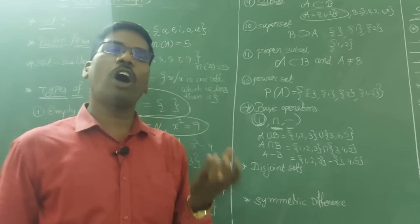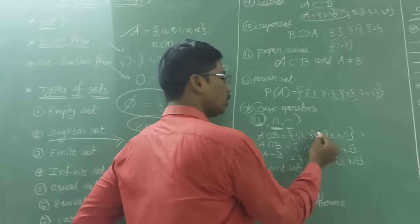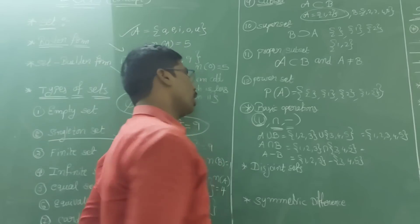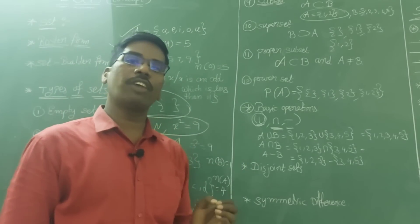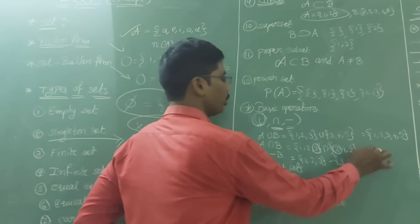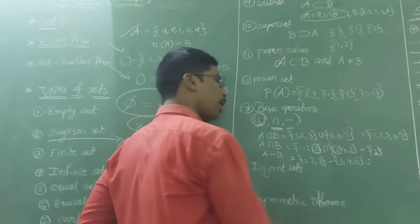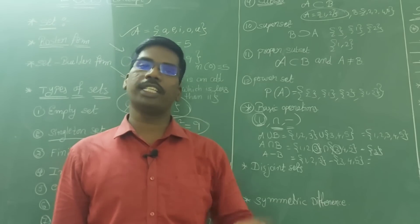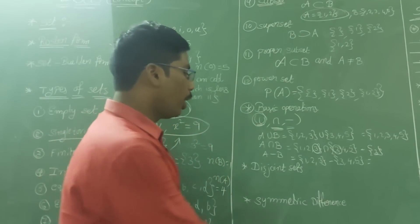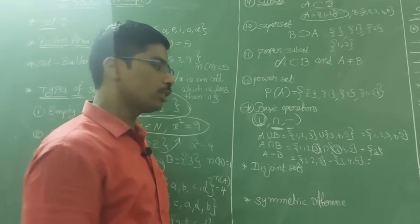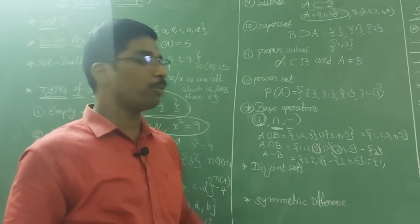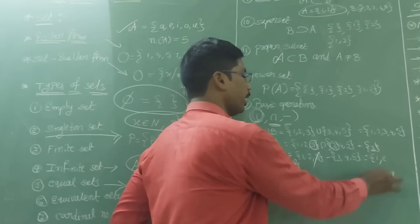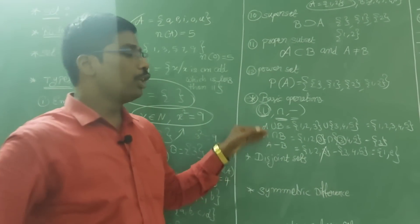A ∪ B means all elements together: {1, 2, 3, 4, 5} — total 5 elements. A ∩ B means common elements: here 3 is in both A and B, so A ∩ B = {3}. A − B means elements present in A only and not in B: 1 is in A but not B, 2 is in A but not B, 3 is in both so we don't take it. So A − B = {1, 2}.